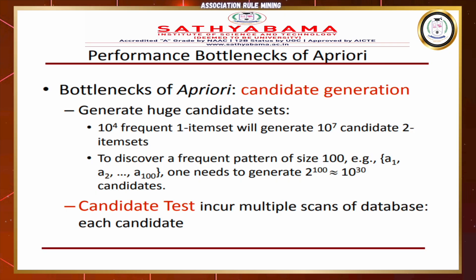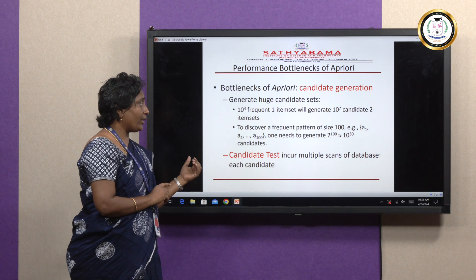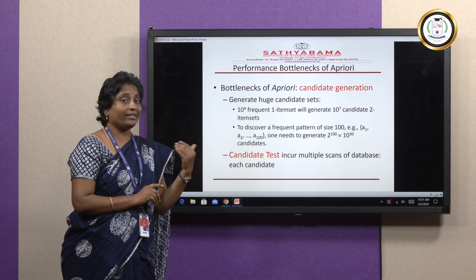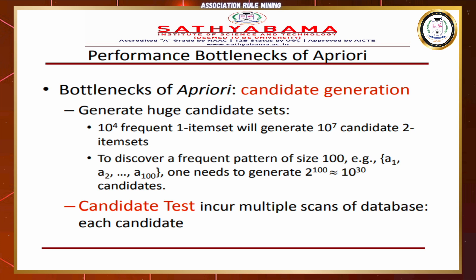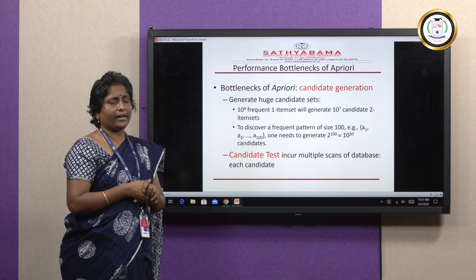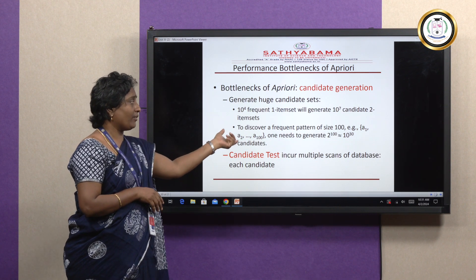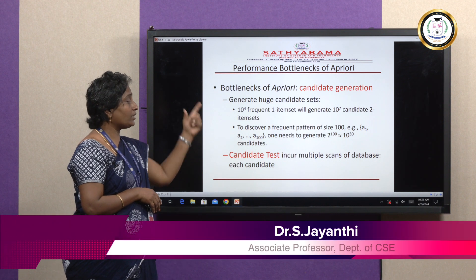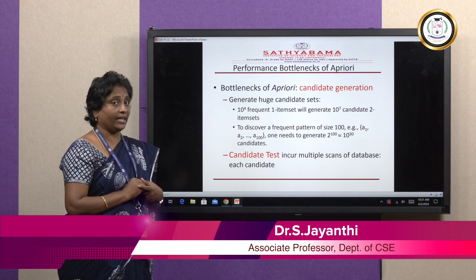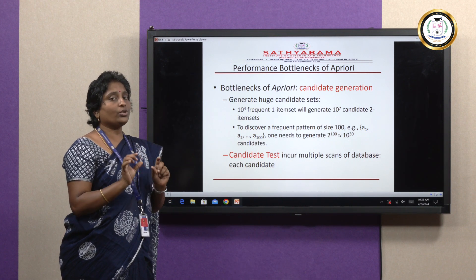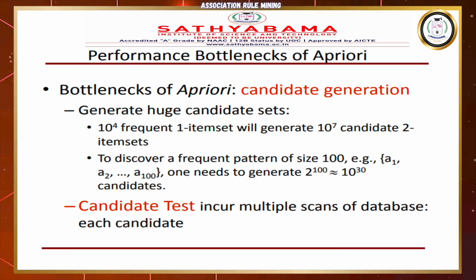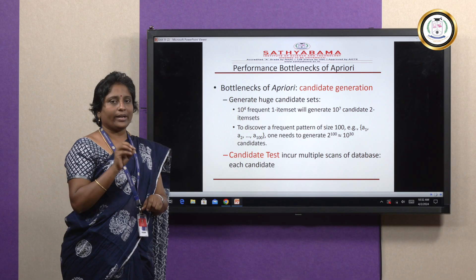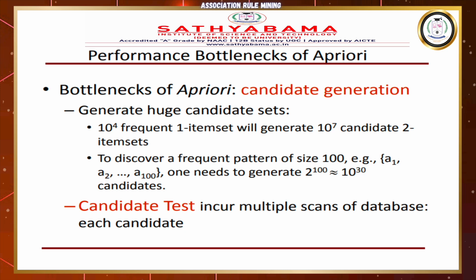The problem with the Apriori algorithm is that while it is a beautiful and wonderful algorithm for finding frequent item sets, generating candidate sets can be very large — much larger than the number of items. For example, for 10 to the power of 7 frequent item sets, we generate candidates of 10 to the power of 7. For a frequent item size of 100, we must generate 2 to the power of 100, which is approximately 10 to the power of 30. This huge candidate set generation is the major bottleneck, and as the candidate set increases, the scanning of the database for each candidate also increases, making it computationally expensive.